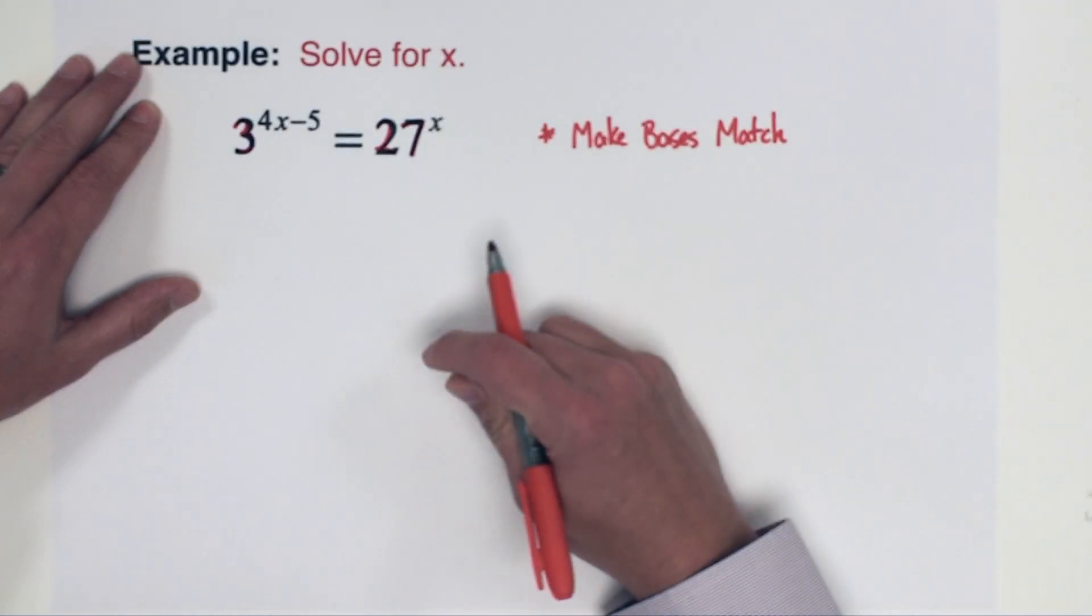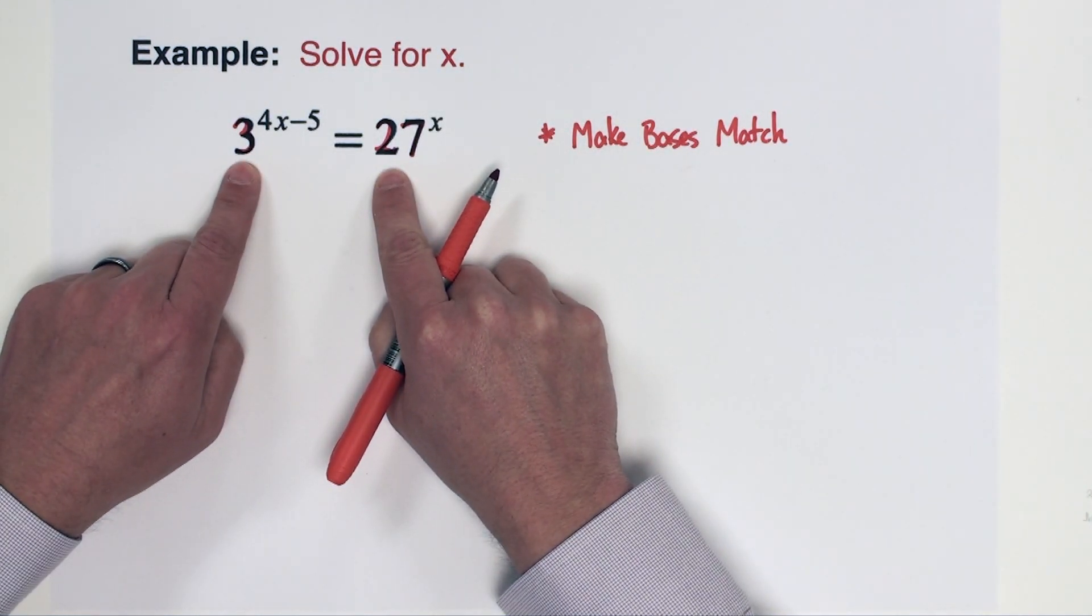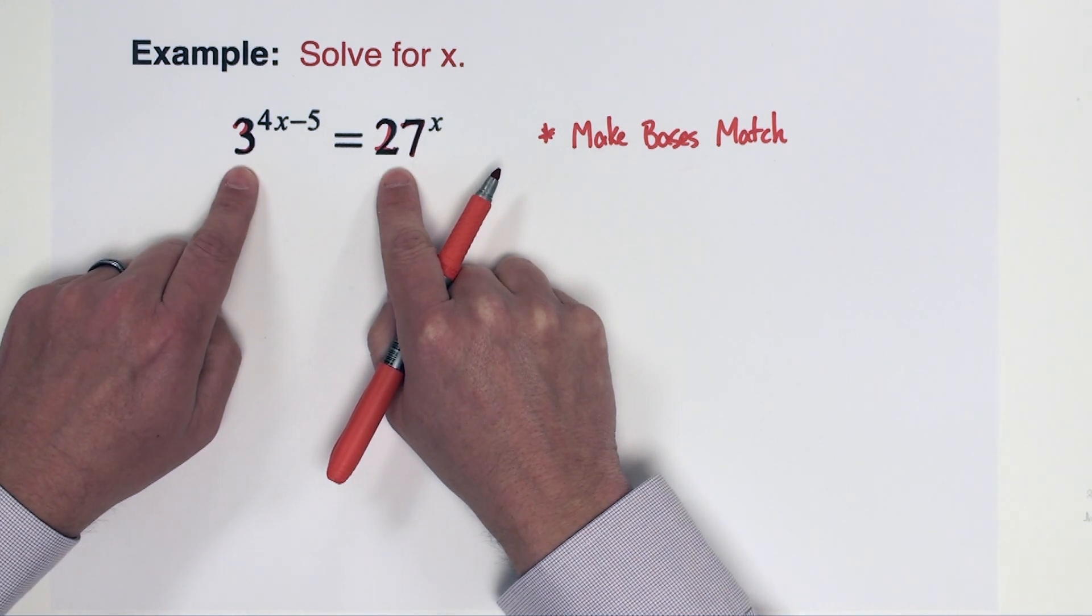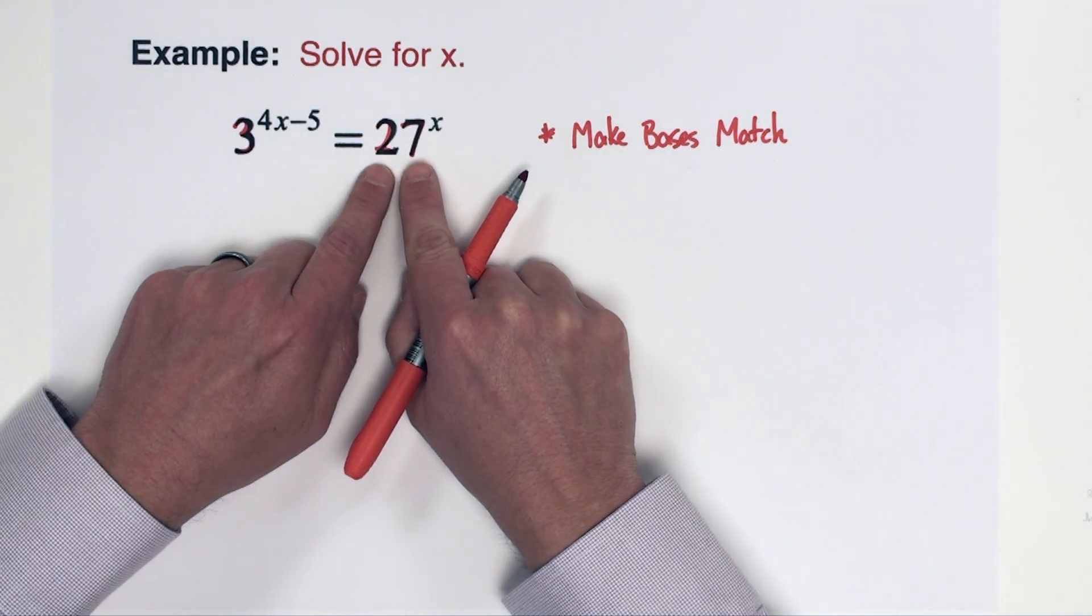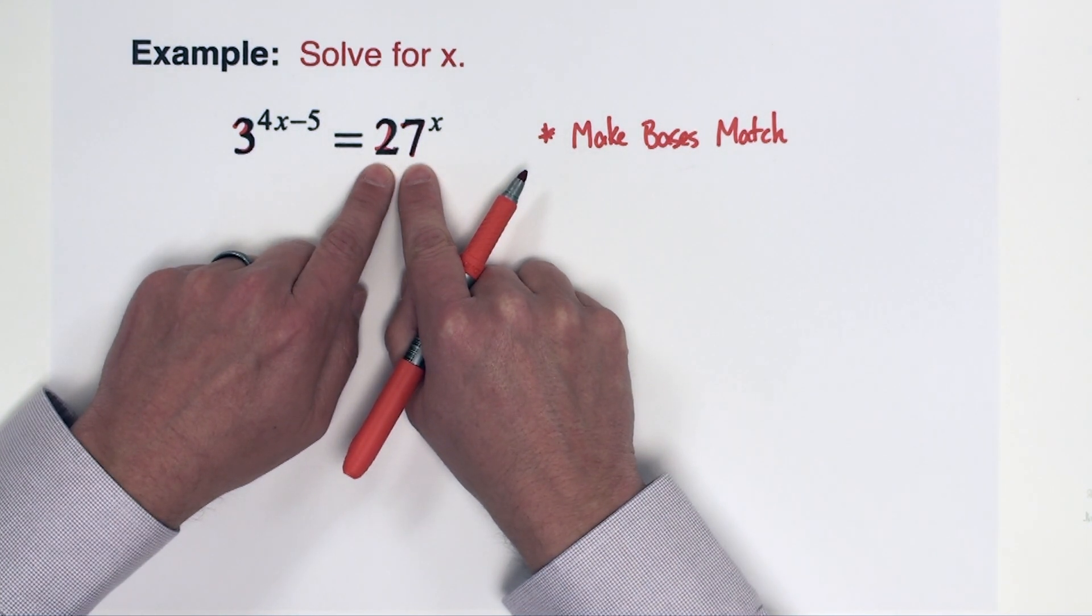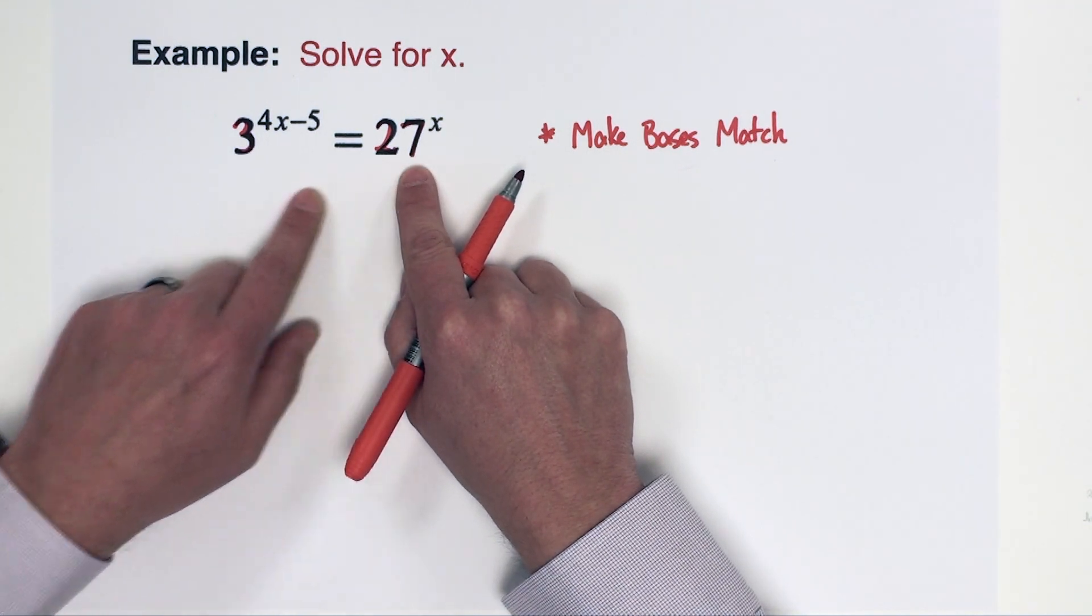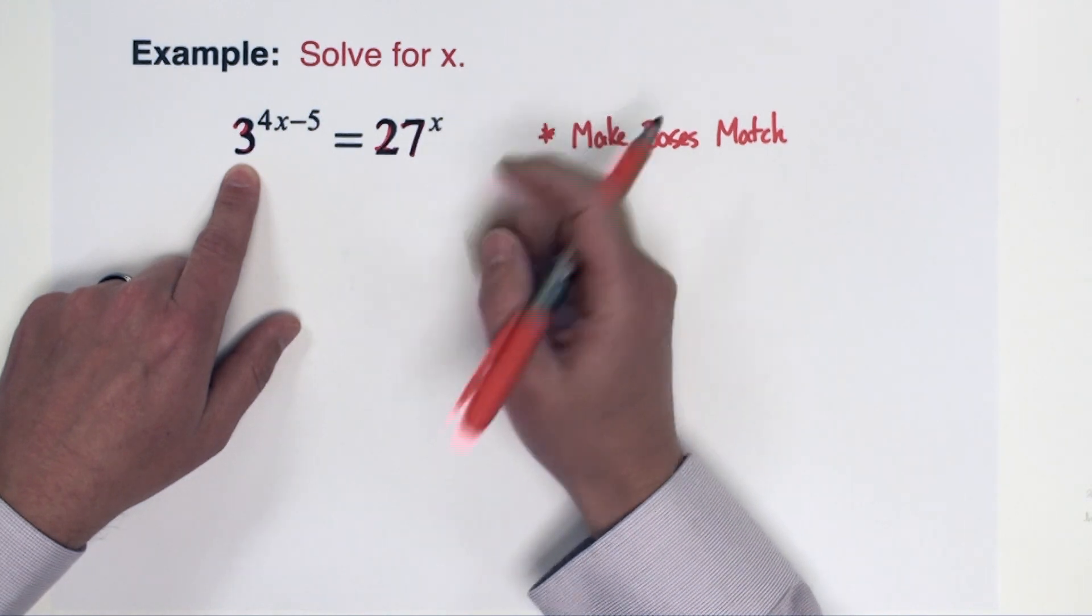That can be accomplished by changing both numbers or it can be accomplished by just changing one of the two numbers. In this problem, when I look at 27, it's often helpful to look at the larger number and see if we can rewrite that larger number as the smaller number raised to a power. So that's where I'm going to begin.